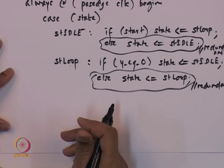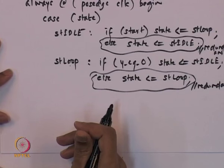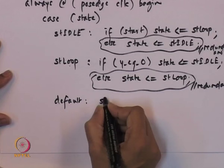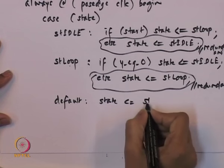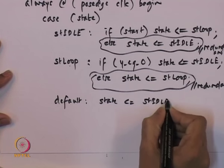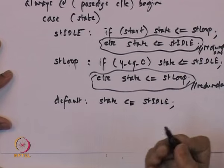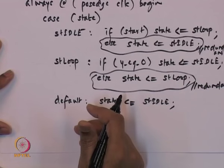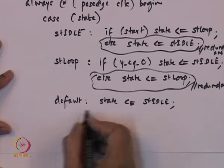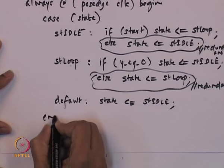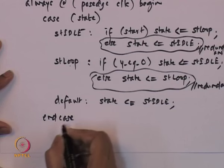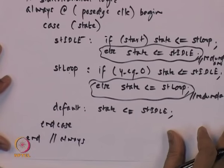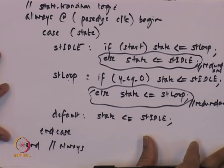These are the only two states. To complete the case statement we add a default: if some unexpected value appears on the state signal, we move to state_idle. This Verilog code fragment completely captures the state transition logic.